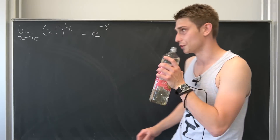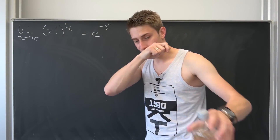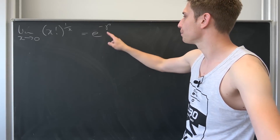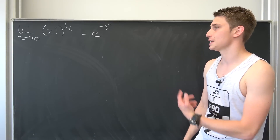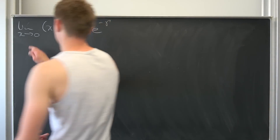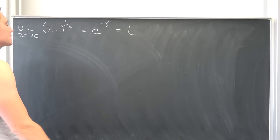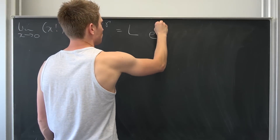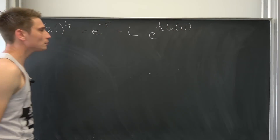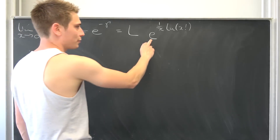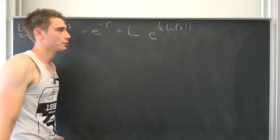So how can we start? I'm going to rewrite this argument as e to the ln of something. This limit I'll denote as capital L — it's nothing but e to the (1/x) times natural log of x factorial. Since the exponential function is continuous, we can bring the limit inside and just look at the limit as x approaches 0 of (1/x) · ln(x!).